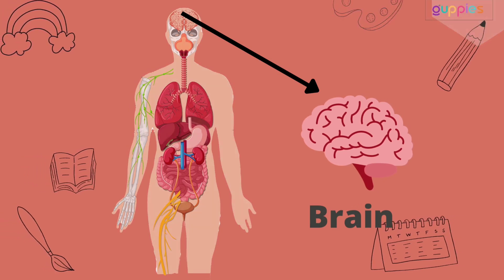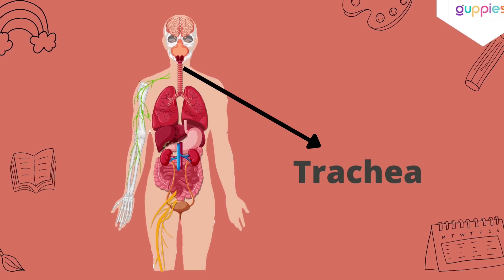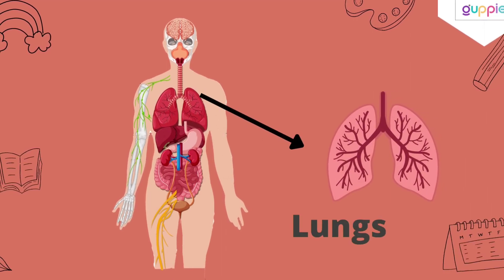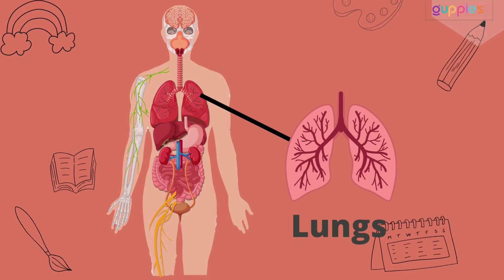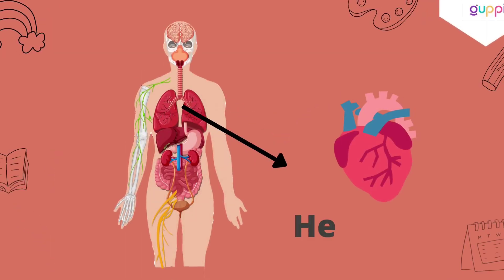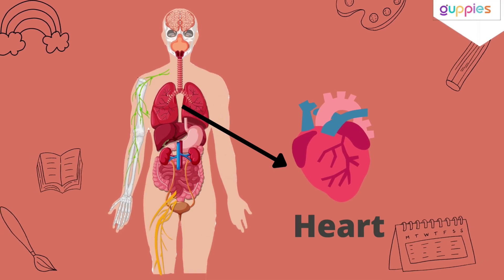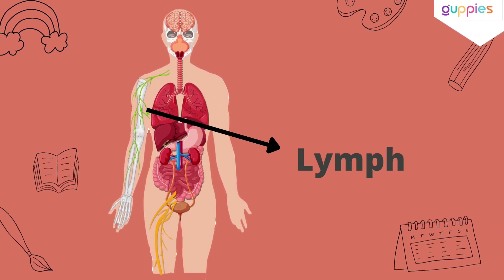This is trachea, T-R-A-C-H-E-A, trachea. This is lungs, L-U-N-G-S, lungs. This is heart, H-E-A-R-T, heart. This is lymph, L-Y-M-P-H, lymph.